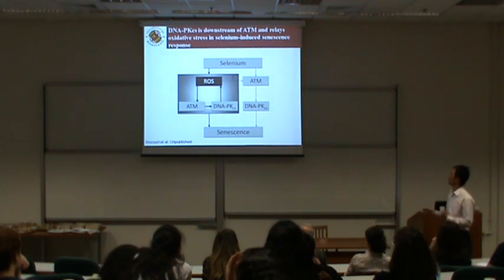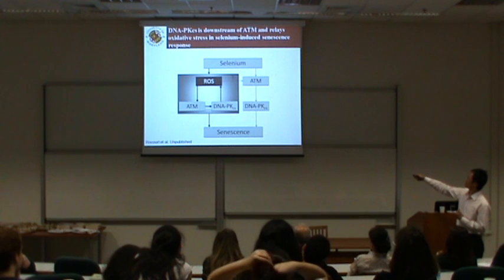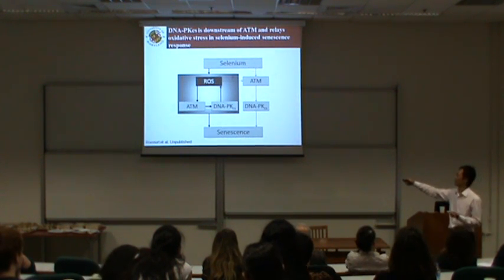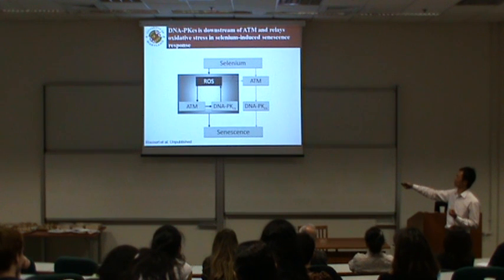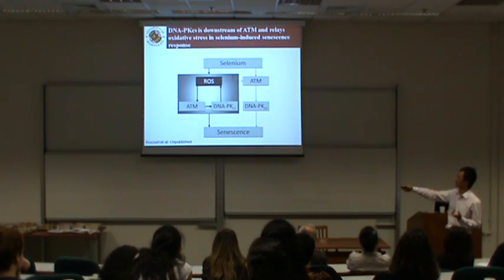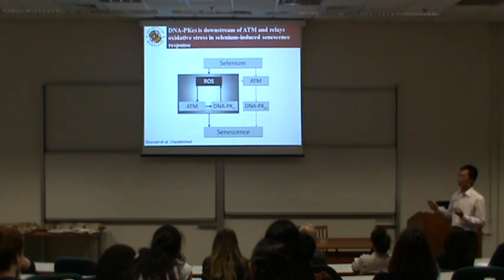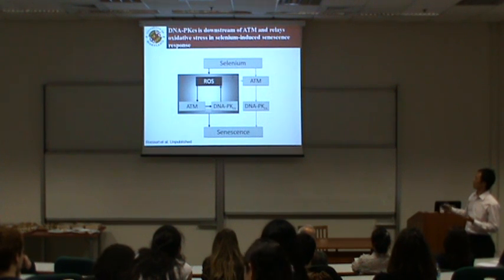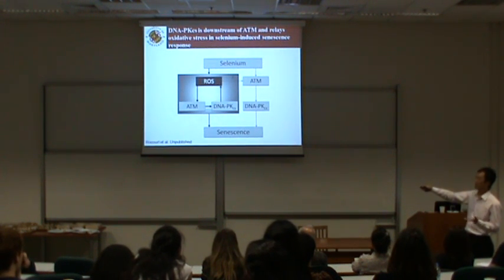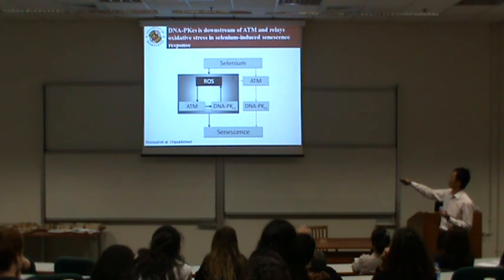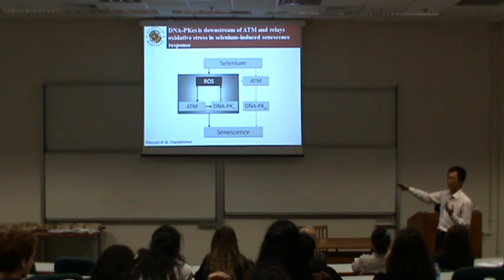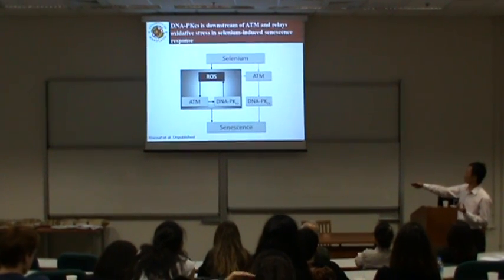Putting everything together, this is what we think happens. A high nutritional dose of selenium increases reactive oxygen species, which first activates ATM. ATM is upstream of DNA-PKCS, receiving a signal from ROS and then sending a signal to DNA-PKCS. The role of DNA-PKCS in the selenium-induced response is to maintain the oxidative state — at least to maintain the ROS level — contributing to the selenium response.